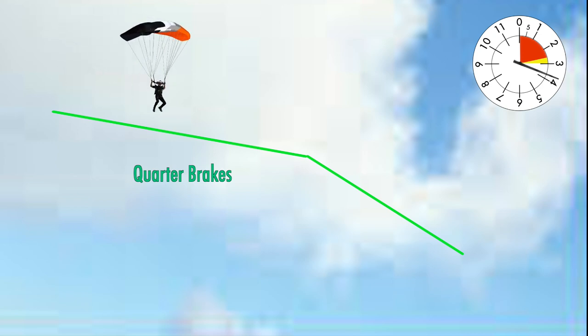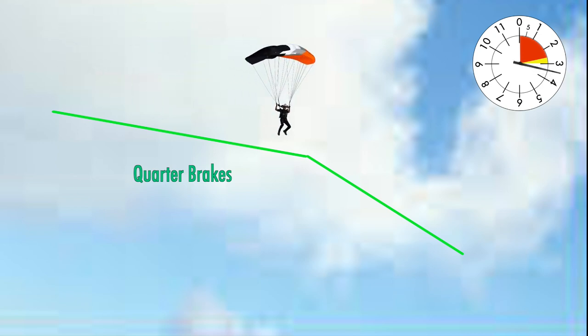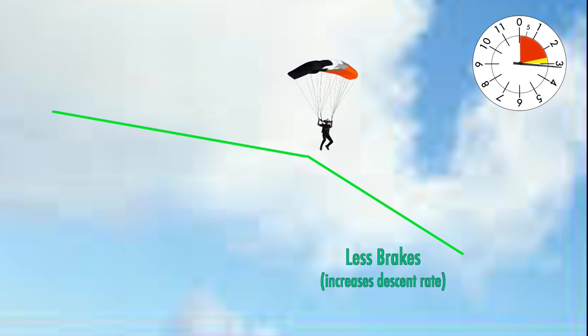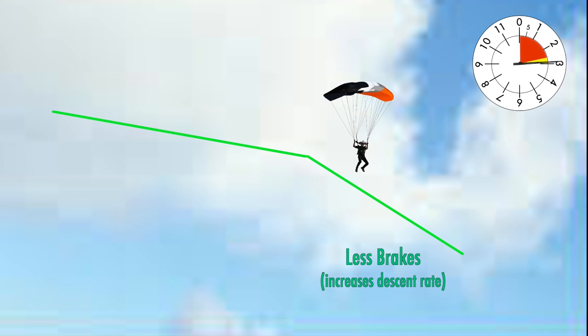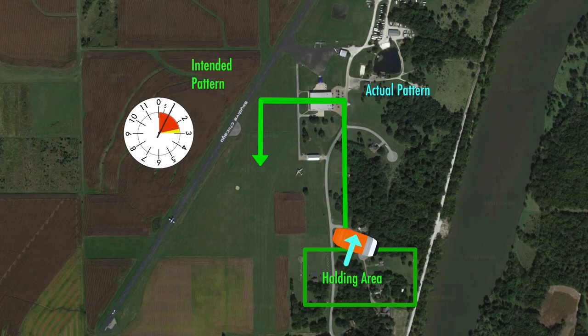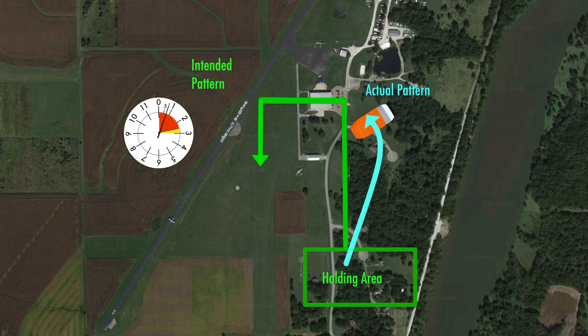If you're headed to your next entry point higher than intended, from quarter brakes, return to full flight to increase your descent rate, or take the current leg out wider to lose more altitude.